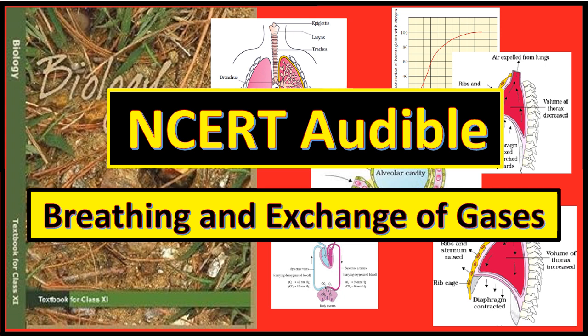Partial pressures of these gases in atmospheric air and the two sites of diffusion are as follows: Oxygen partial pressure in atmospheric air is 159 mmHg, in alveoli is 104, in deoxygenated blood 40, in oxygenated blood 95, and in tissues 40. For carbon dioxide: atmospheric air is 0.3, alveoli 40 mmHg, deoxygenated blood 45, oxygenated blood 40, and tissues 45. This data clearly indicates a concentration gradient for oxygen from alveoli to blood and blood to tissues, and a gradient for carbon dioxide in the opposite direction — from tissues to blood and blood to alveoli. As the solubility of carbon dioxide is 25 times higher than that of oxygen, the amount of CO2 that can diffuse through the diffusion membrane per unit difference in partial pressure is much higher compared to that of oxygen.